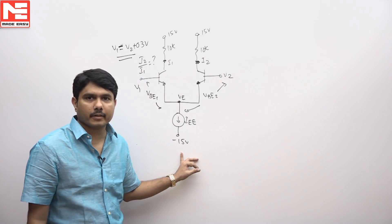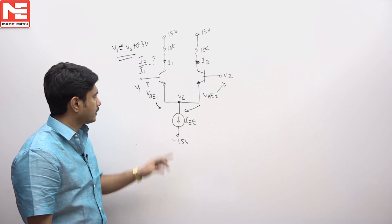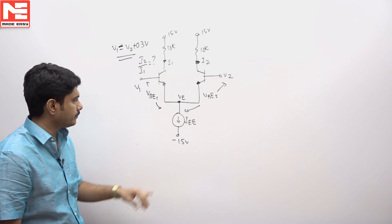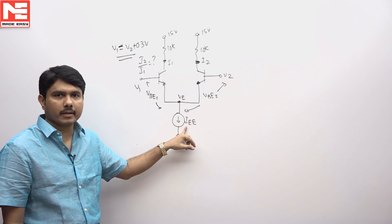Question is related to a differential amplifier. If you see these two transistors, they are identical transistors he has taken with an operating current called as IAE.